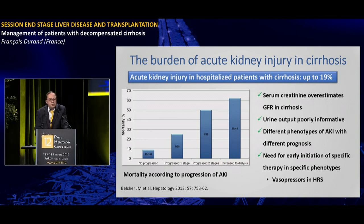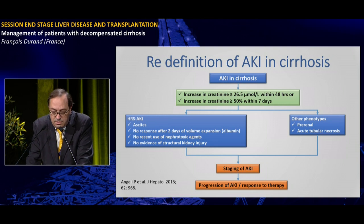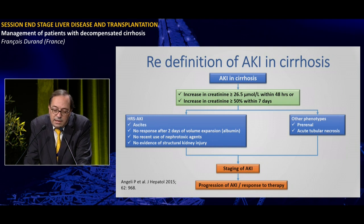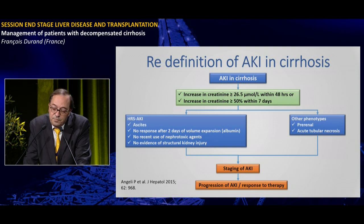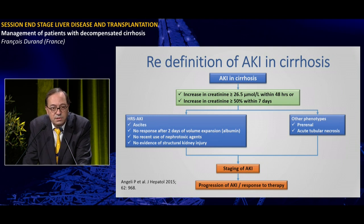There are different phenotypes of AKI with different prognoses, requiring early initiation of specific therapies, particularly vasopressors in hepatorenal syndrome. The criteria for AKI definition in cirrhosis have been revised recently by EASL and the International Club of Ascites. The objective is to recognize AKI at an earlier stage. AKI is now defined as an increase in serum creatinine greater than 26.5 micromol/L within 48 hours, or an increase of at least 50% within seven days.